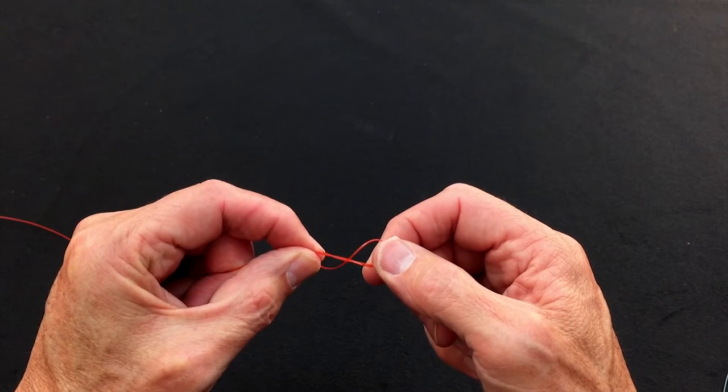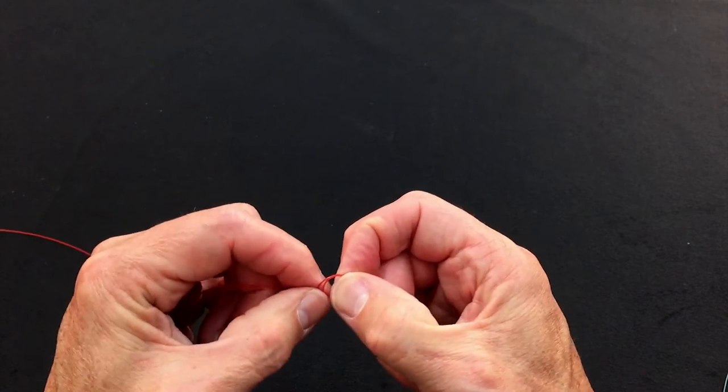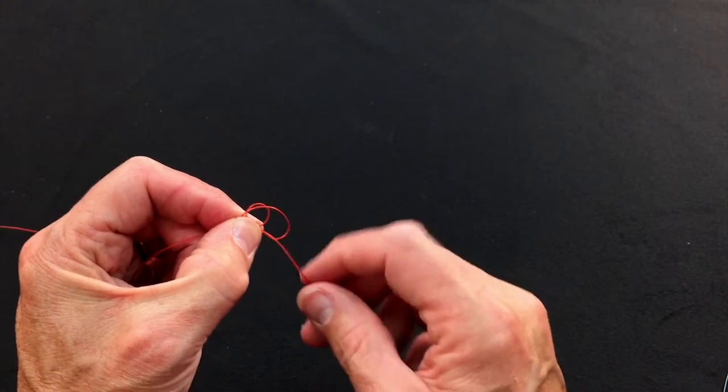I like to roll it to a figure of eight at this stage and then push the two loops of the figure of eight together like this. That's the important part there, that you have these two loops big enough to get something through.